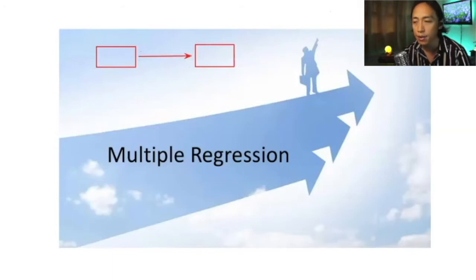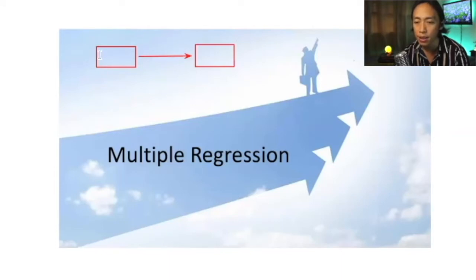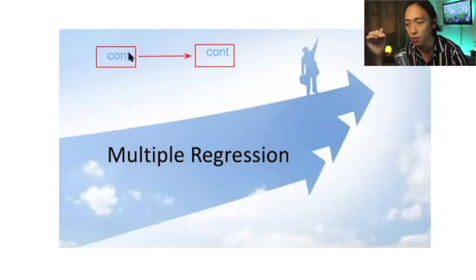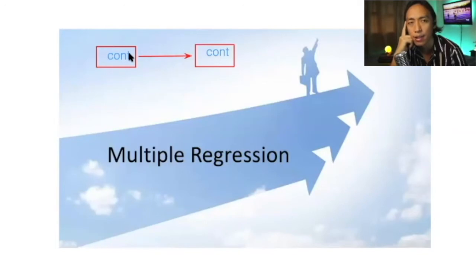Linear regression, although not exclusively, is used when we want to predict the outcome variable using a predictor variable, specifically when these variables are measured as continuous variables. But it may also be the case that the independent variable is a dichotomous variable, or even a three-level categorical variable, although that analysis is more complicated because you have to create dummy variables.